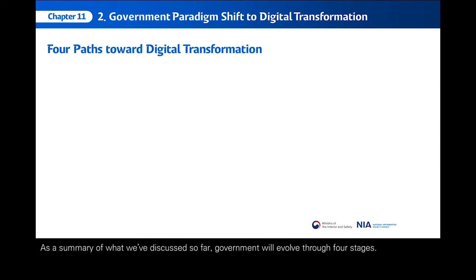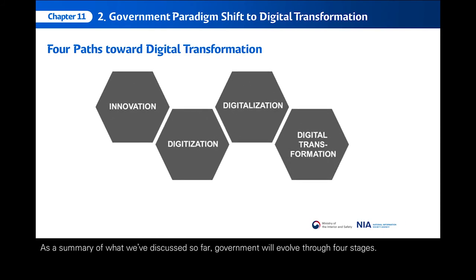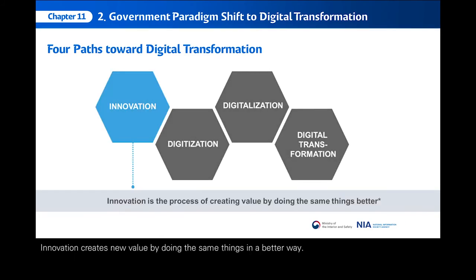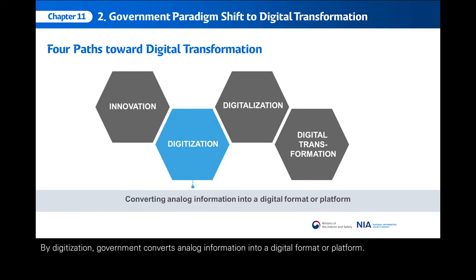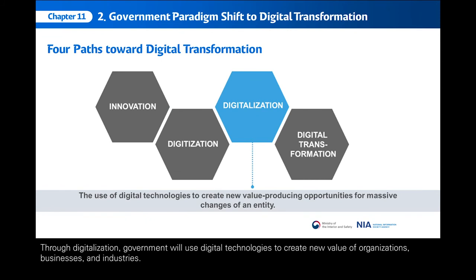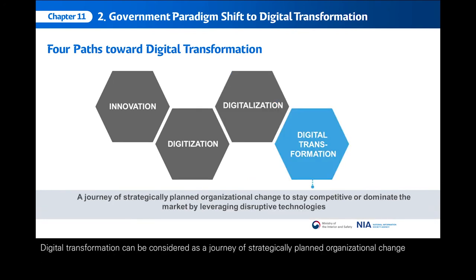As a summary, government will evolve through four stages. Innovation creates new value by doing the same things in a better way. Through digitization, government converts analog information into a digital format or platform. Through digitalization, government uses digital technologies to create new value for organizations, businesses, and industries. Digital transformation can be considered as a journey of strategically planned organizational change to stay competitive or dominate the market by leveraging disruptive technologies.